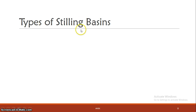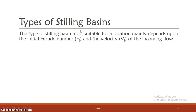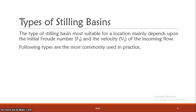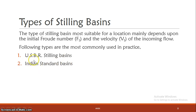Next, we discuss the types of stilling basins. The classification is based on different criteria including the initial Froude number F1 and the velocity of incoming flow. There are two main classification systems: the USBR stilling basins, which are the USBR recommendations, and the Indian Standard basins.